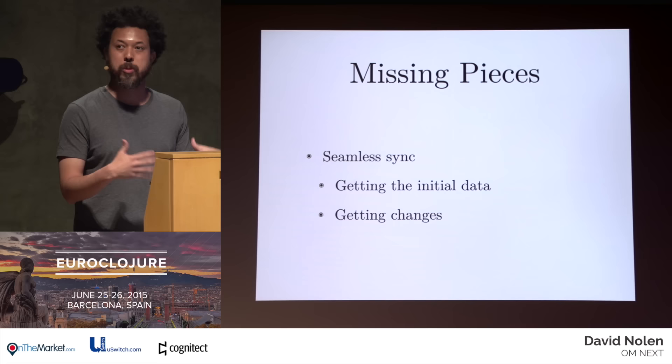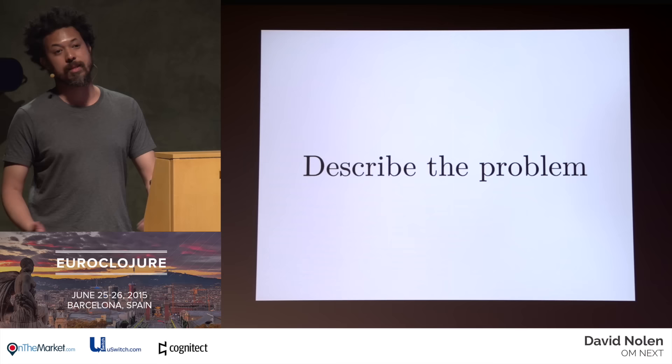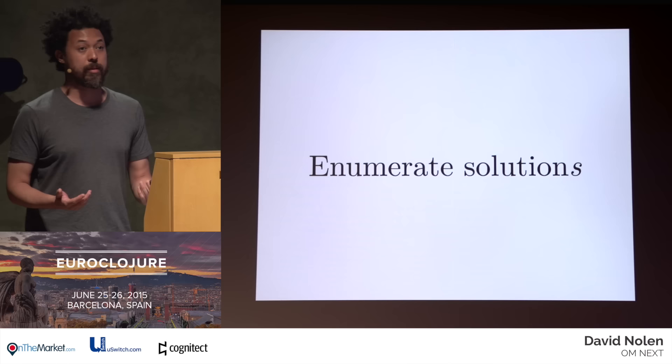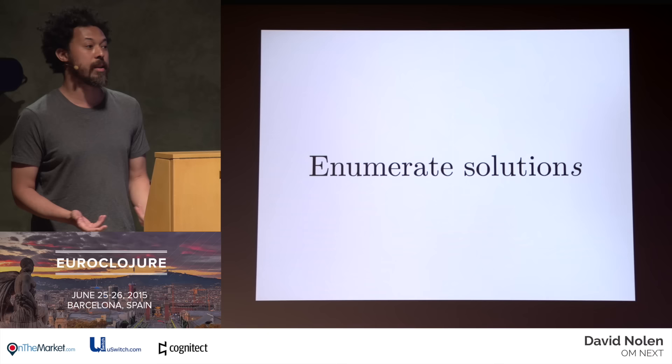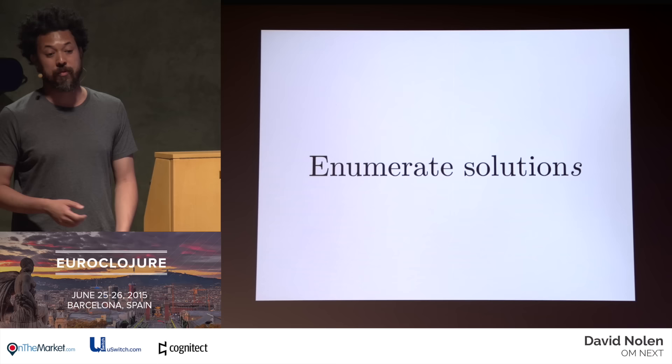There's no standard way to talk about the sync problem. One thing I learned is the very first thing you have to do is describe the problem. The problem has nothing to do with Om or React — there's a generic problem for all software that has to deal with remote clients. You have a server and you have some remote client. Once you describe the problem clearly, you have to enumerate solutions and weigh multiple options. We're going to talk about three that are really important — one from Facebook, one from Netflix, and one from Datomic.